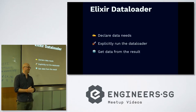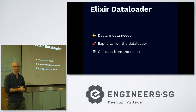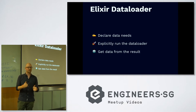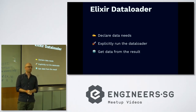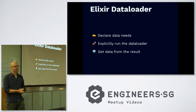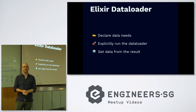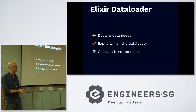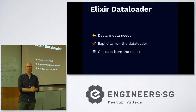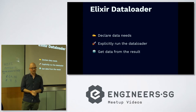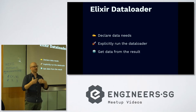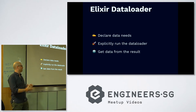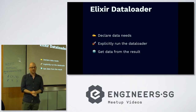If you use Elixir, Absinthe is the most popular GraphQL server, and they created a data loader. The data loader was created by Facebook, who released versions in different languages, and the Absinthe project created a version for Elixir. How this works is: you declare your data needs, then explicitly run the data loader, and it will fetch everything in one go, applying batching, caching, and everything like that. Then you can get the data back from the results.